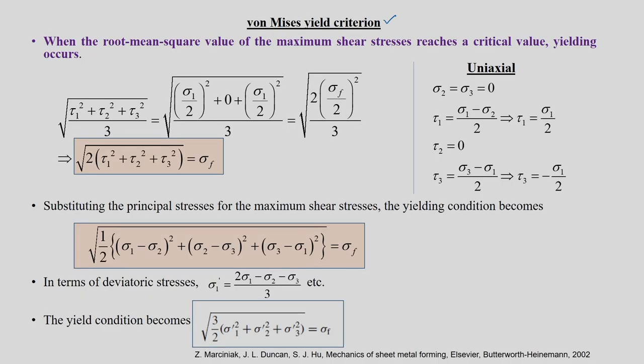A similar and widely used criterion in metal forming is the von Mises yield function. Its statement is: yielding starts when the root mean square value of the maximum shear stresses reaches a critical value. You have tau_1, tau_2, tau_3; find their root mean square, and if it reaches a critical value, yielding starts.